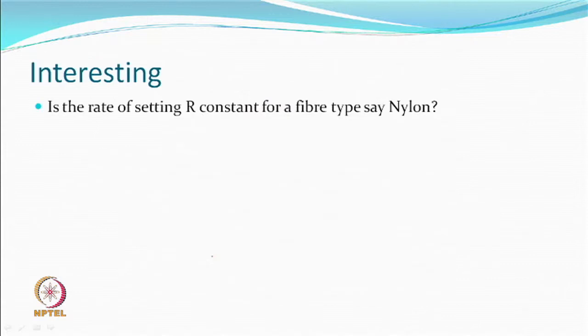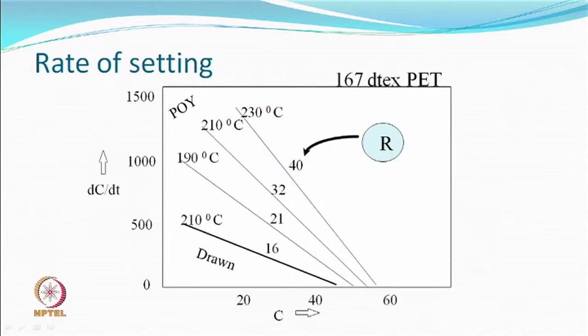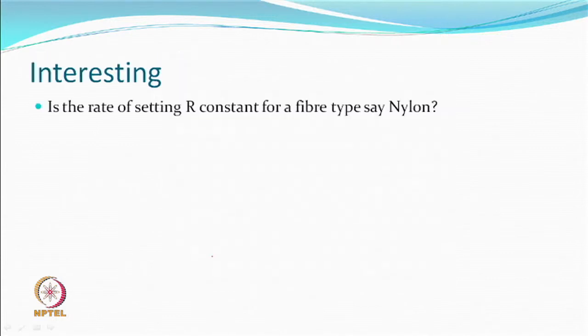The texturing time can now be reduced and therefore machines can be run faster. Approximately, a material that required 0.3 to 0.4 seconds in the heater with fully drawn yarn would require only about 0.1 second with POY.